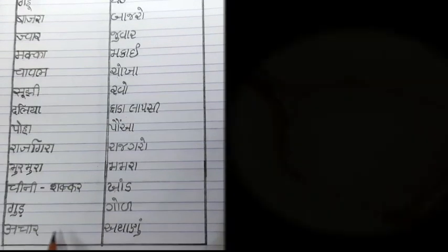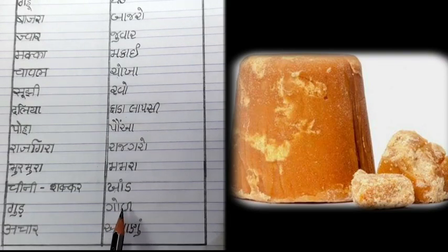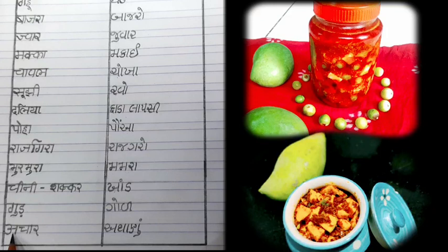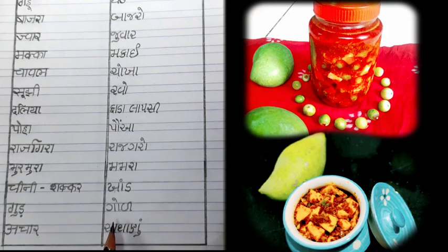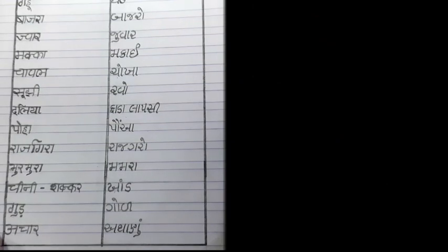ત્યાર પછી છે 'ગુડ' - 'ગોળ'. 'ગોળ' પણ શેરડીમાંથી બને છે. 'ગોળ' પણ કોઈ વાનગી બનાવવી હોય, મીઠાશ લાવવા વપરાય. 'ગોળ'ને સારી રીતે સાચવી શકીએ અને ખાઈ શકીએ. 'ગોળ'ની 'ગળ', 'ઉંઘ', 'ઘ', 'ચૂરમ', 'લાડુ' - વિવિધ પ્રકારે ગોળ વપરાય છે.